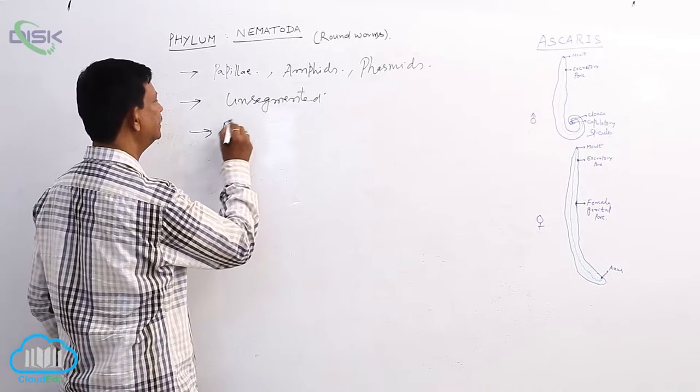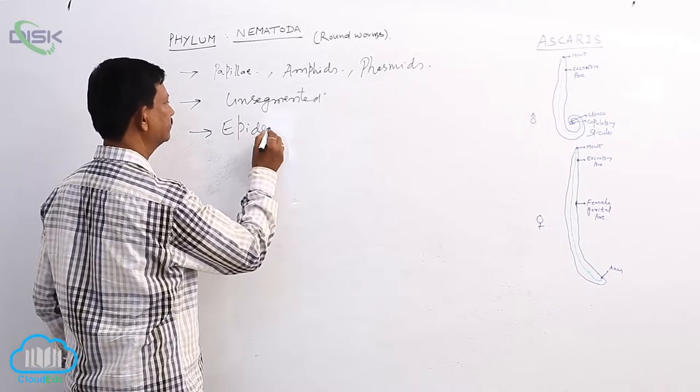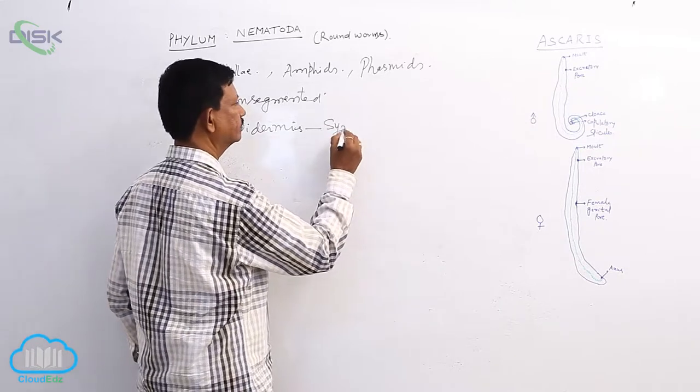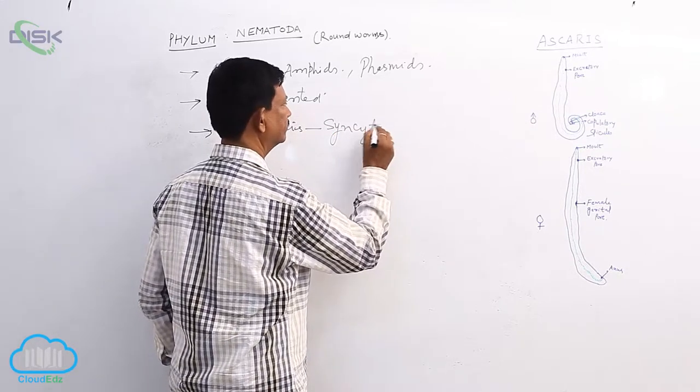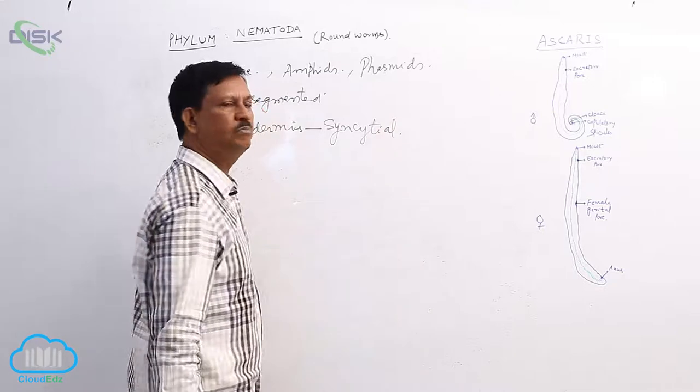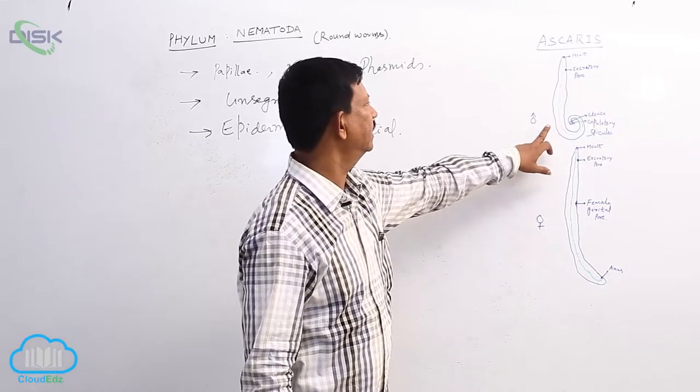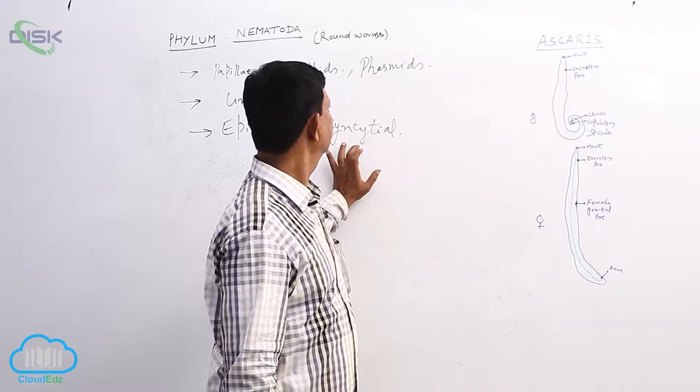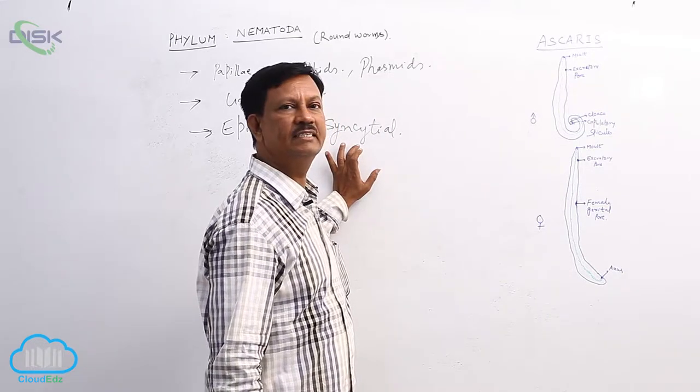And epidermis is syncytial. Its body is externally covered by a membrane which is known as the epidermis. In the epidermis, syncytial nature is present.